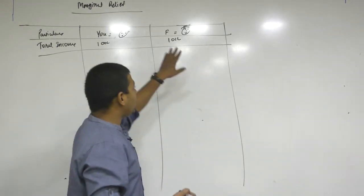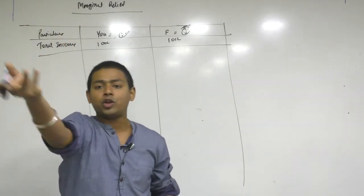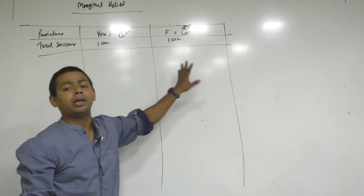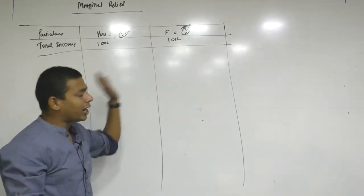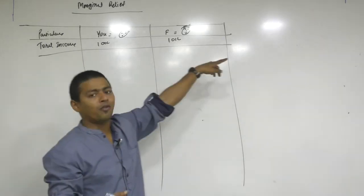All right, so again he will be having pain. You cannot have pain. You are earning 100 lakh. Out of that you are paying. So you will never demand for marginal relief. But your friend might demand for marginal relief. Let's look at the pain first. Let's compute marginal relief logically first and then through formula.